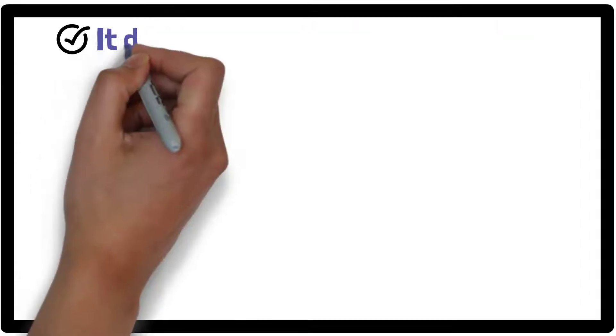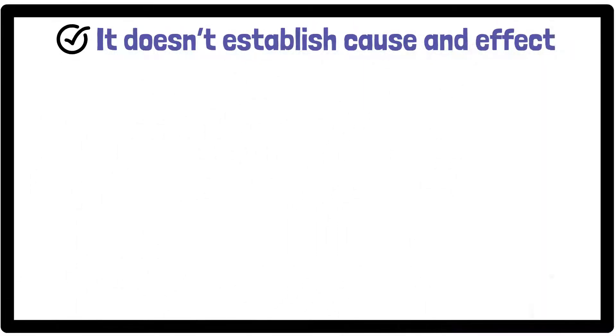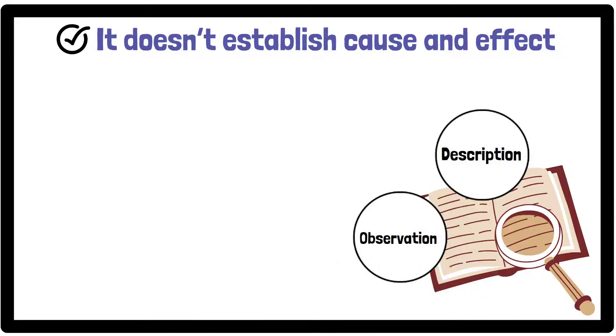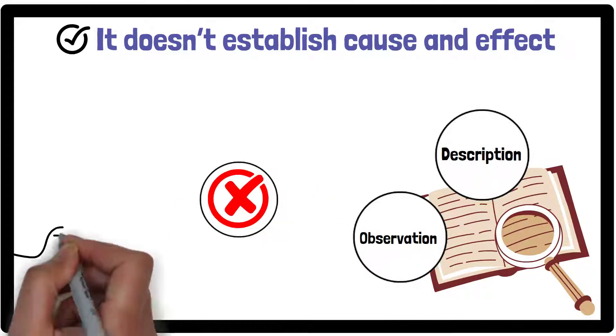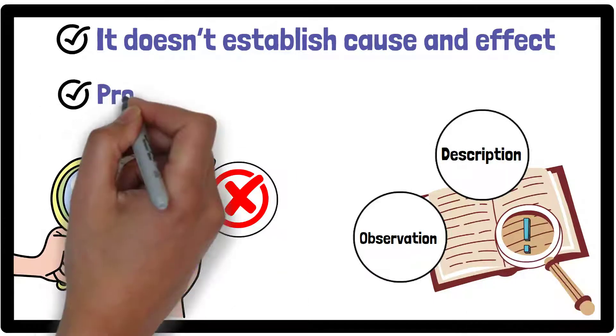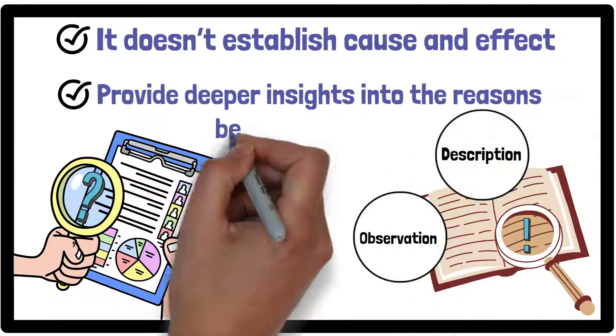However, descriptive research is not without its criticisms. One criticism is that it doesn't establish cause and effect. Because descriptive research focuses only on observation and description, it can't explain why certain behaviors or trends occur. This limits its ability to provide deeper insights into the reasons behind the findings.